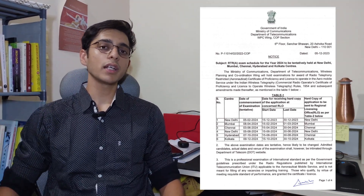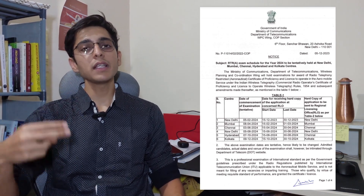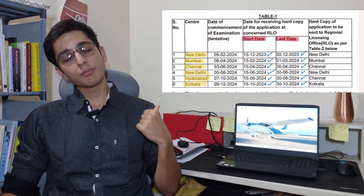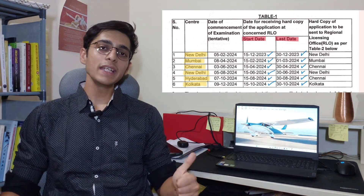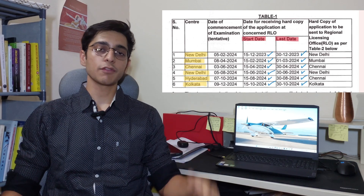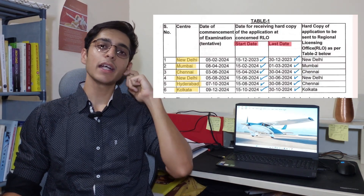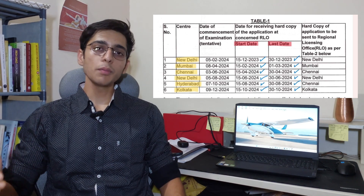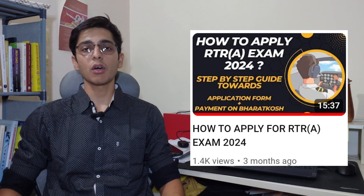You can see the schedule on your screens right now. This exam is conducted six times a year — that means in every two months, at an interval of two months. There are different centers allotted for different attempts. The only center with two attempts is Delhi. For giving any attempt, you first need to apply, and the table shows application dates as well. I have made a separate video on how to apply and the difficulties you might face while filling the form — the link will be in the description.